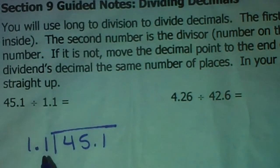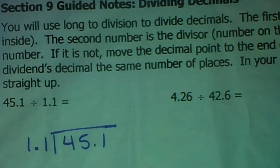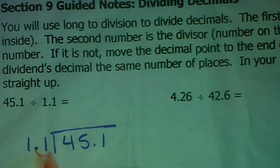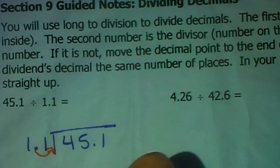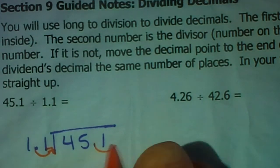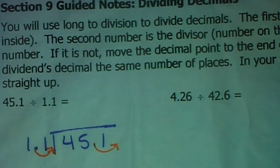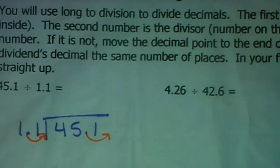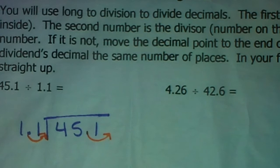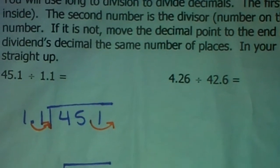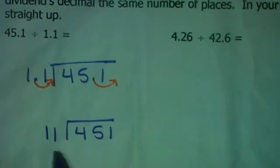Now, you'll notice this 1 and 1 tenth, it's not a whole number. We need it to be. So that means we would need to move this decimal point over one place in order to make it a whole number. If we move this decimal point over one place, it's kind of like an equation. Whatever you do on the outside, you need to do on the inside. So I would want to move that one over one place as well. So the real problem we're solving here is 451 divided by 11.